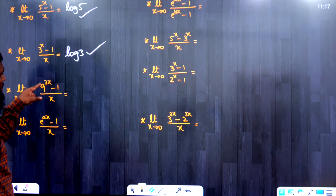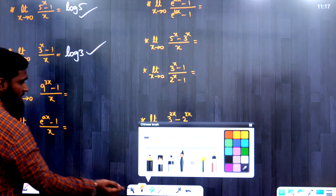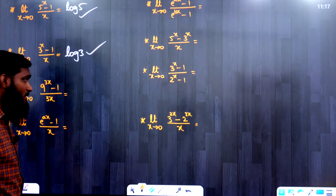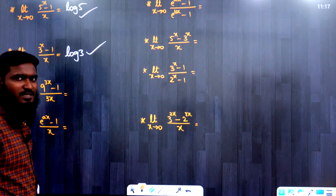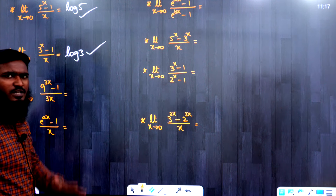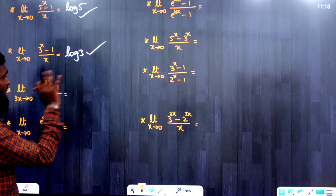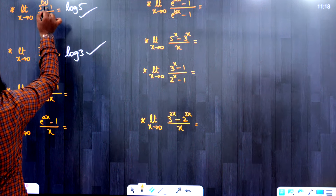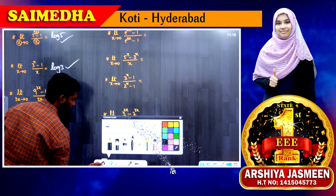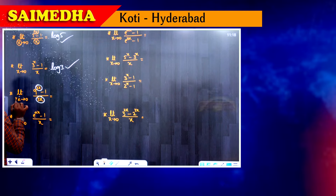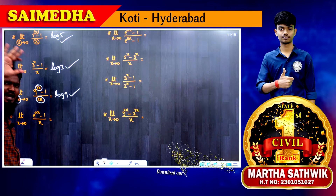Next: limit 3x tends to 0, 9^(3x) minus 1 by 3x. The question has 3x in the exponent and 3x in the denominator. The key concept is: if the same function appears in the exponent and the denominator, and it tends to 0, the formula still applies directly. So here, the 3x function and the same 3x function is tending to 0, and the answer is log 9.